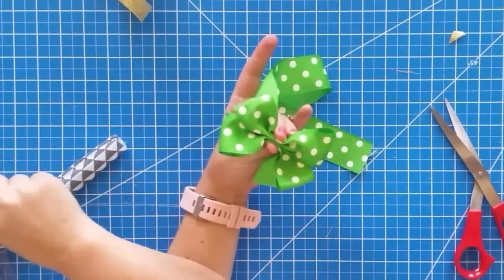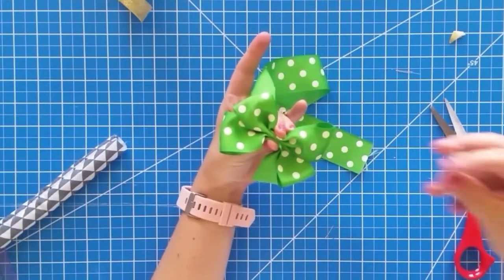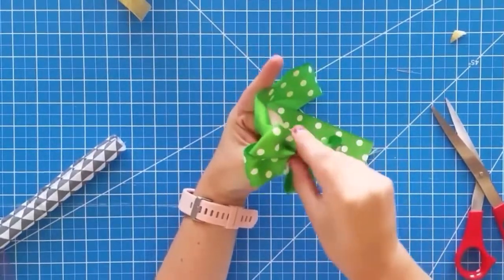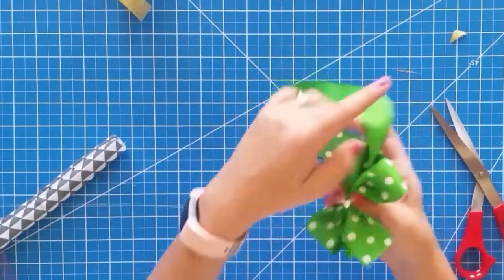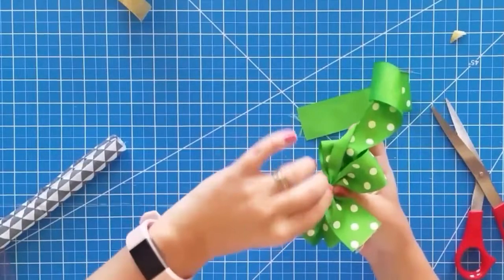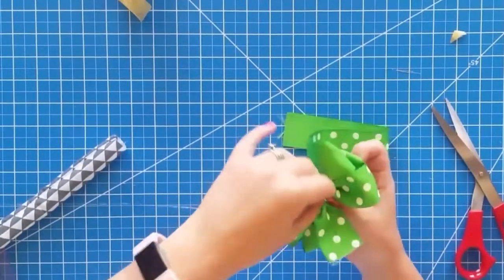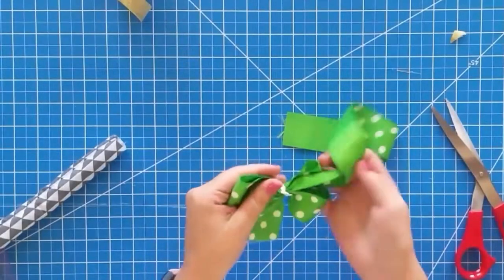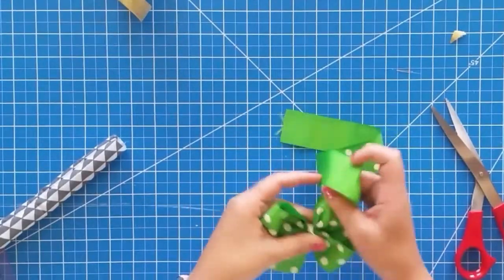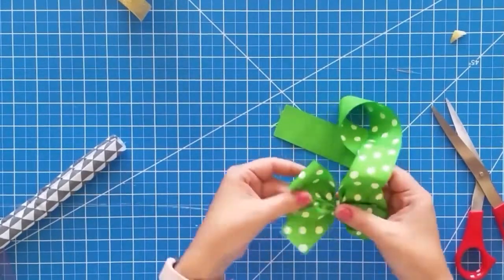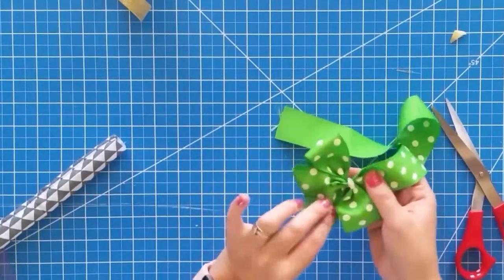Now you need like a little piece of wire or string or something. I'm using the little ties that go around bread when you buy them at the store. Whatever you can find works, it will be covered up, you won't be able to see it. So I'm just going to use this wire around the center. I'm going to twist it tight so that it will hold the bow in place.